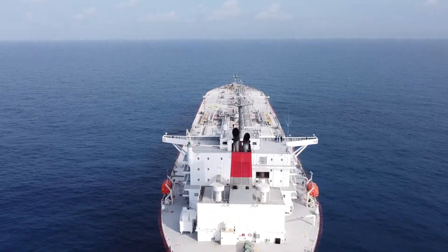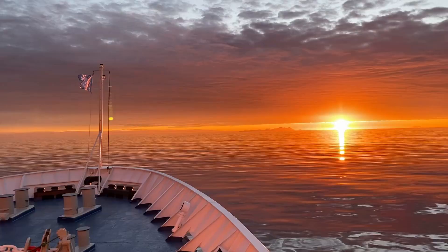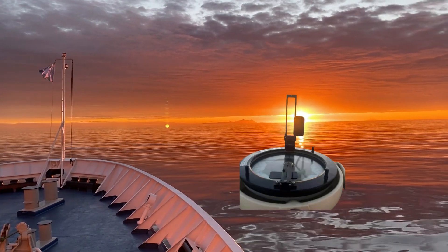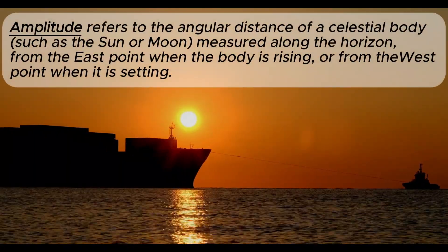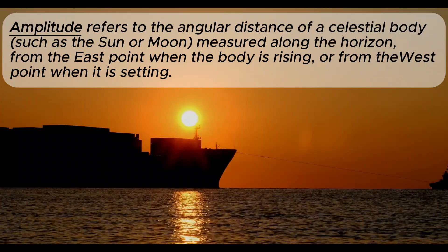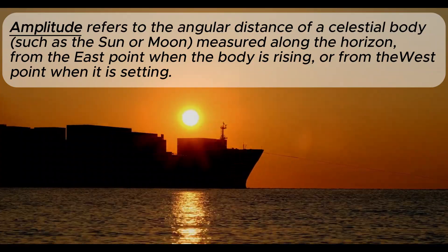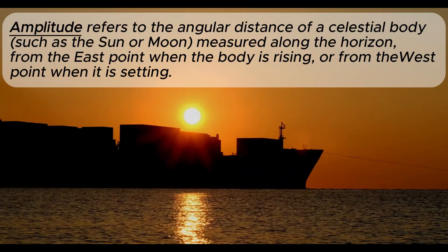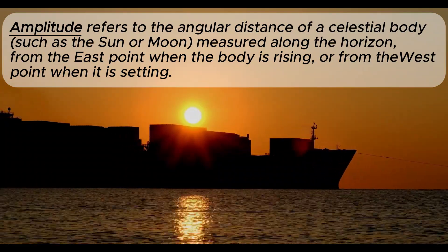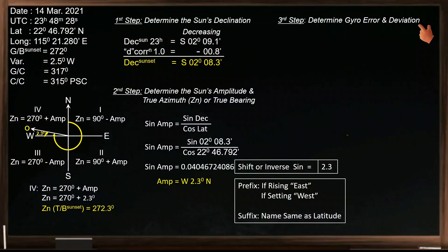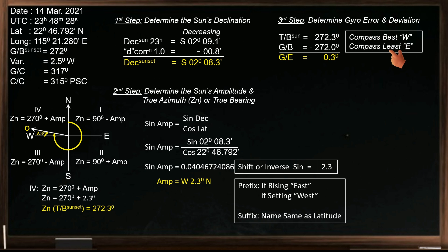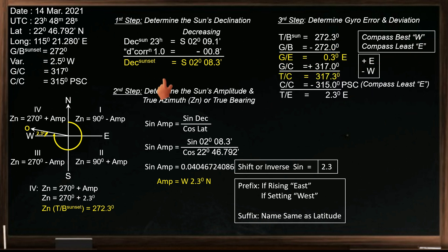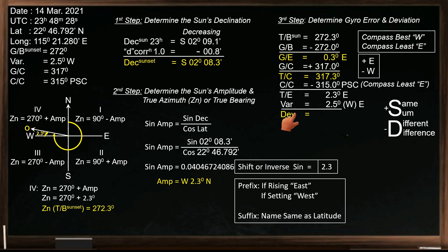In today's video, I'll show you how to determine the gyro error and the deviation in the ship's heading using the amplitude of the sun. Amplitude refers to the angular distance of a celestial body, such as the sun or moon, measured along the horizon from the east point when the body is rising, or from the west point when it is setting. It is primarily used to determine the error of the ship's compass by comparing the compass bearing of the chosen celestial body with its true bearing at the time of observation.